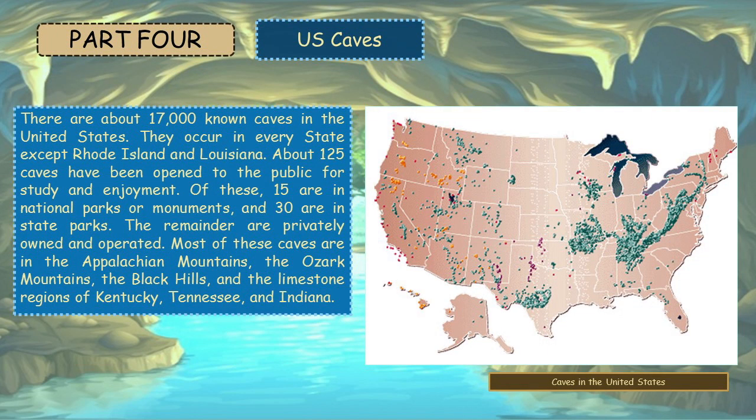There are about 17,000 known caves in the United States, occurring in every state except Rhode Island and Louisiana. About 125 caves have been opened to the public for study and enjoyment. Of these, 15 are in national parks or monuments and 30 are in state parks. The remainder are privately owned and operated. Most of these caves are in the Appalachian Mountains, the Ozark Mountains, the Black Hills, and the limestone regions of Kentucky, Tennessee, and Indiana.